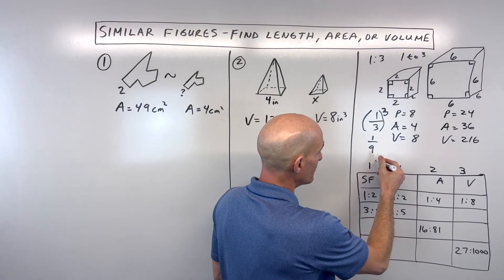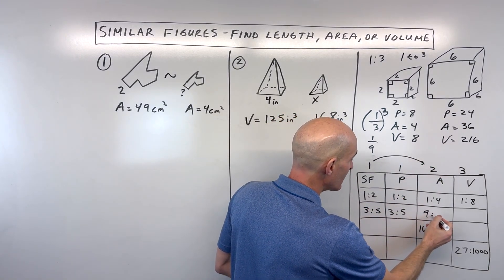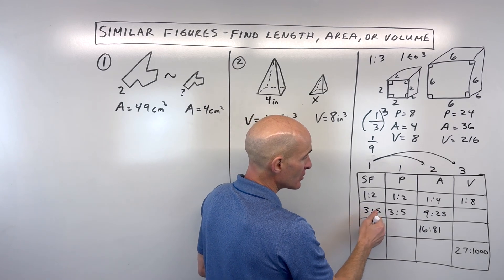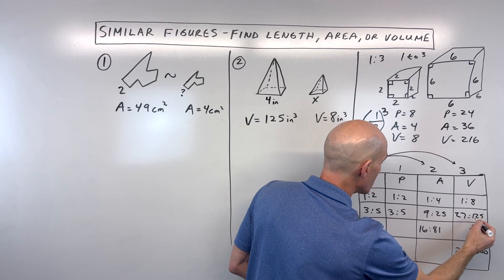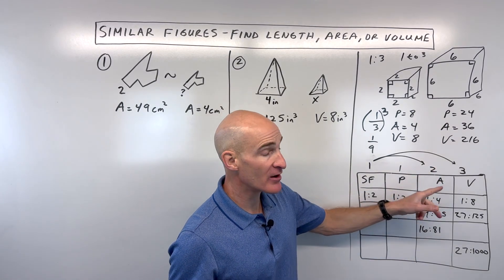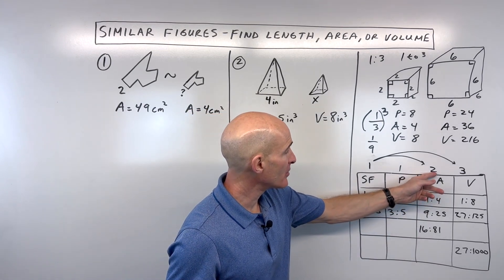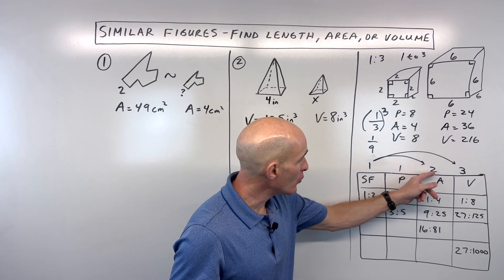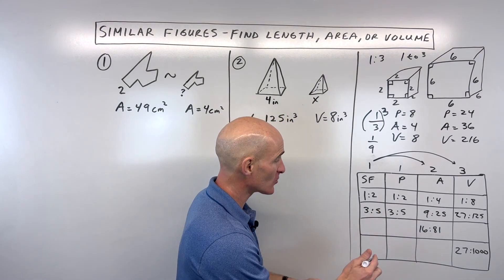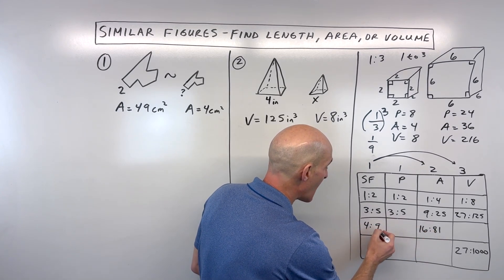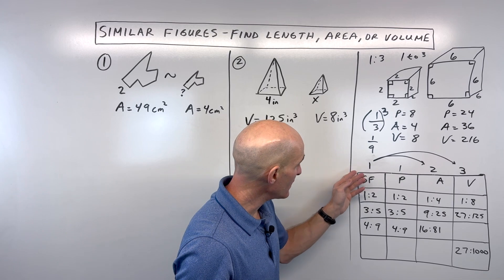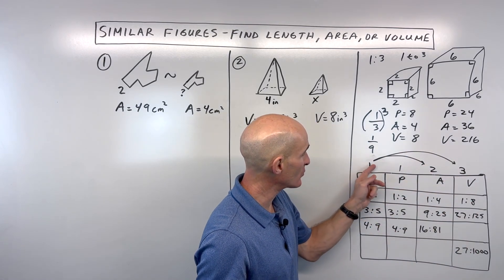Going from the perimeter (one-dimensional) to area (two-dimensional), square the scale factor: 3²=9, 5²=25, giving an area ratio of 9 to 25. For volume, cube it: 3³=27, 5³=125. If given the area ratio — say 16 to 81 — take the square root to get the scale factor: √16=4, √81=9, so the scale factor and perimeter ratio are both 4 to 9.